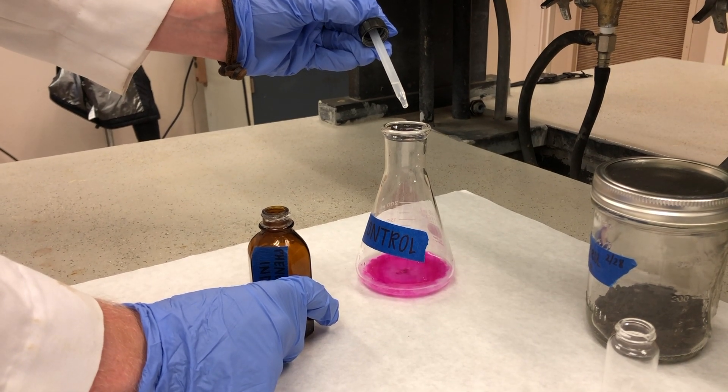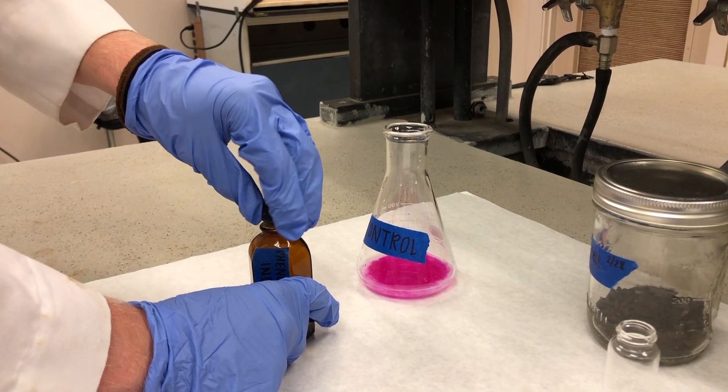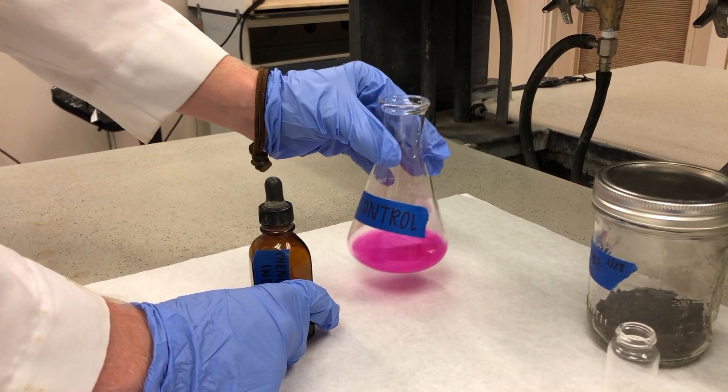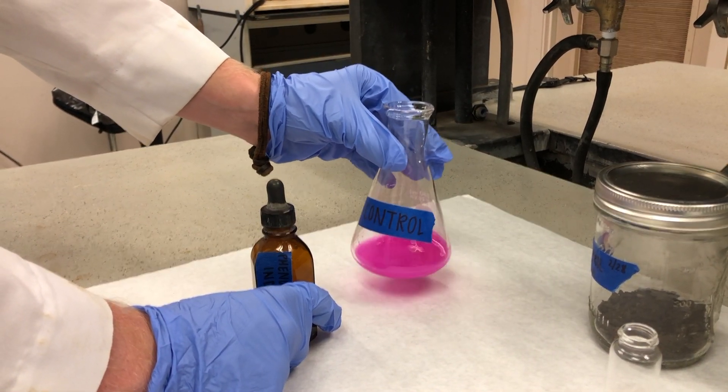Next, add 5 drops of phenolphthalein indicator to each flask. This will turn the solution bright pink to red. Swirl the contents of the flask to mix them.